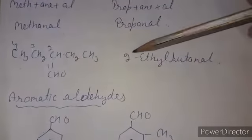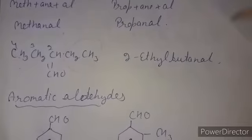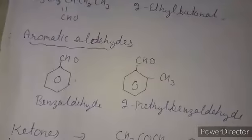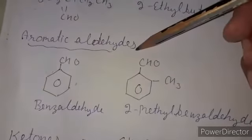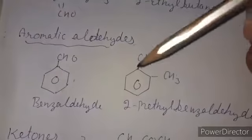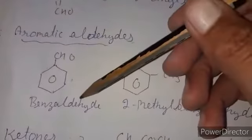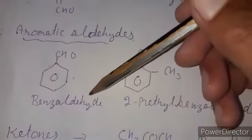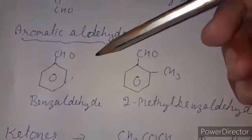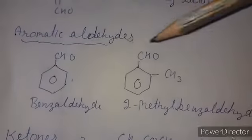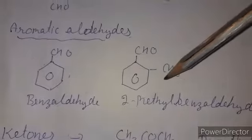In another example, we start numbering from the aldehyde carbon: one, two, three, four — giving 2-ethylbutanal. For aromatic aldehydes, if we attach a CHO group directly to a benzene ring it is called benzaldehyde. With a substituent attached it is called 2-methylbenzaldehyde.